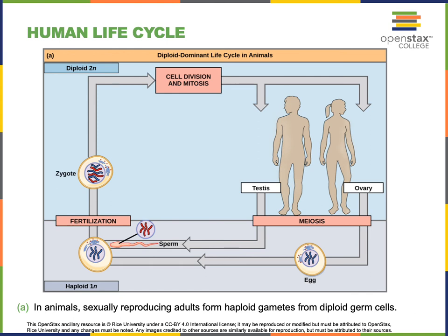When fertilization occurs, 23 chromosomes from the sperm join with 23 chromosomes in the egg to produce a zygote. The zygote is a single-celled embryo, but the zygote is a diploid cell. It has 23 pairs of homologous chromosomes — 23 from the sperm and 23 from the egg.